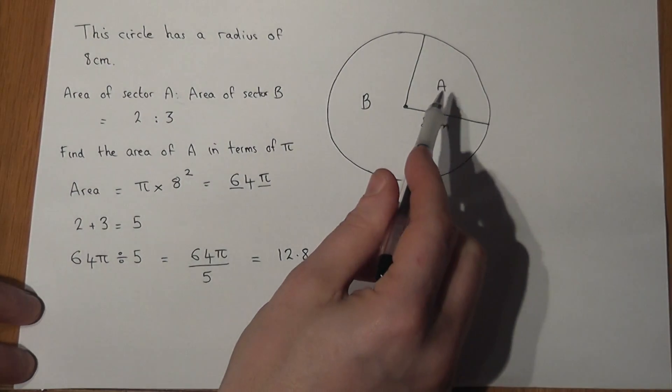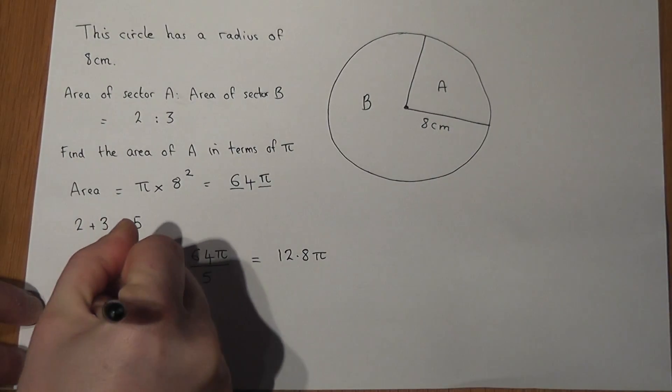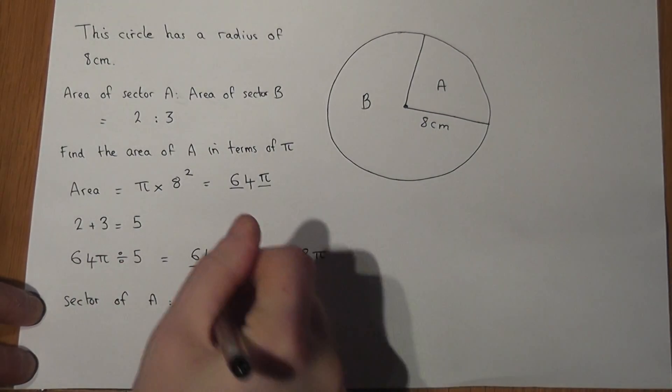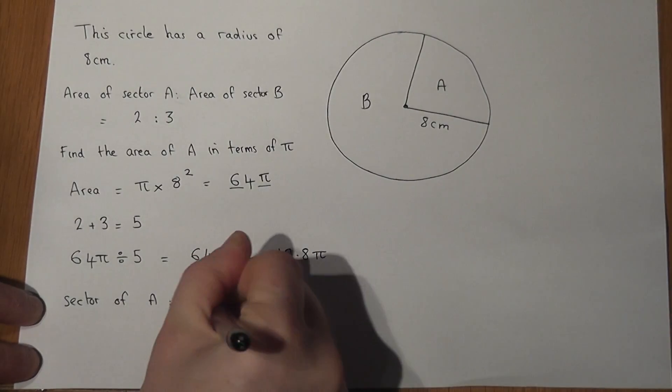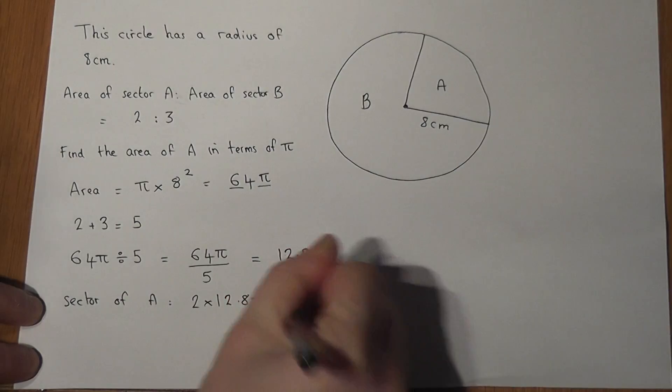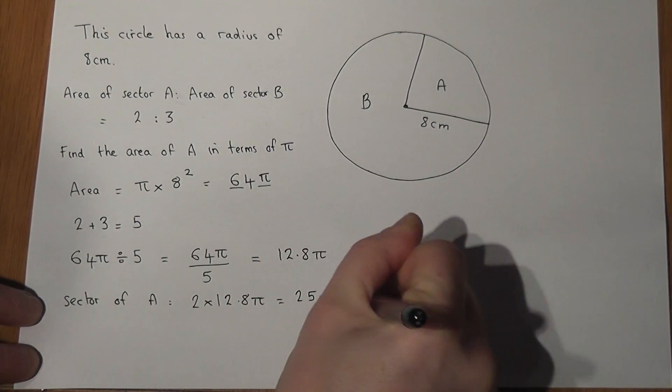Now sector A is worth two parts. So to find the area of sector A all I do is 2 lots of these answers. Well 2 lots of 12.8π just equals 25.6π.